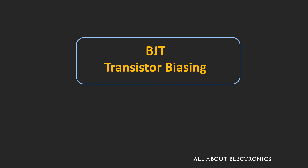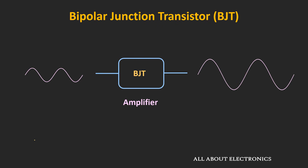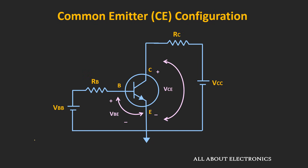First of all, let us understand what is biasing and why we need to bias the transistor. As you are aware, one of the most common applications of the BJT is to use it as an amplifier, where if we apply a time-varying signal as an input, then it amplifies the input signal. But this BJT won't amplify the input signal until we apply a DC power supply. The energy supplied by this DC supply is used to amplify the input signal. So the process of applying this DC voltage source to the BJT is known as biasing. The common emitter configuration of the BJT is frequently used for signal amplification, and we will use that configuration to understand transistor biasing.